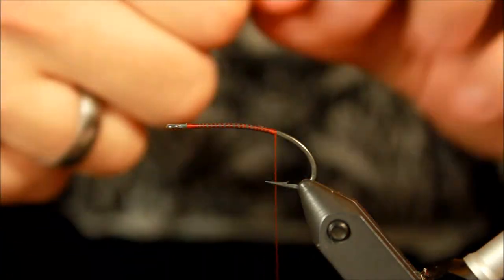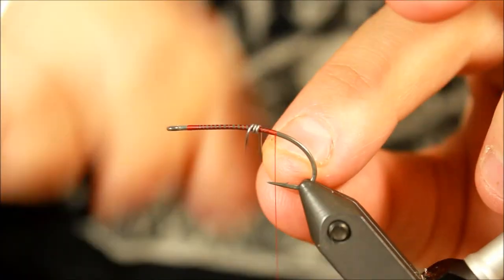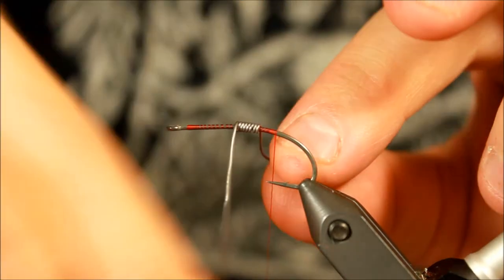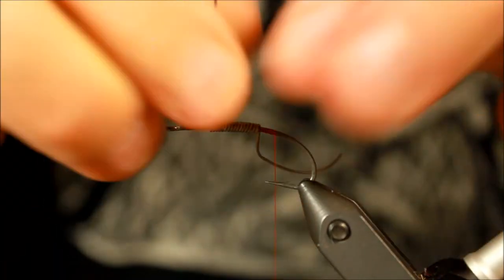First of all, I'm going to take some of this to make sure that this fly has some proper weight. I'm just going to turn this up along the hook shank here to make sure that it stays where I want it to be, like so.